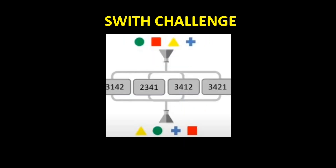Let us look at another question from the same level. Start looking from the output side. The first geometrical figure in the output is the triangle, and its position at the input is 3. Next is a circle, and the position of the circle at the input is 1, giving 3, 1. With only one option that satisfies this, that should be the answer.